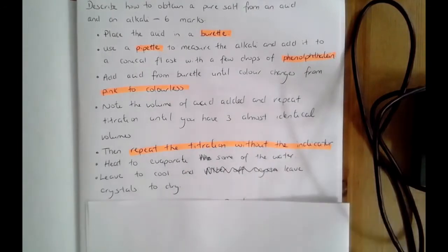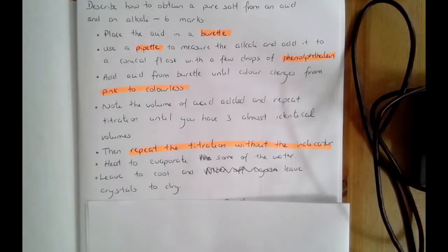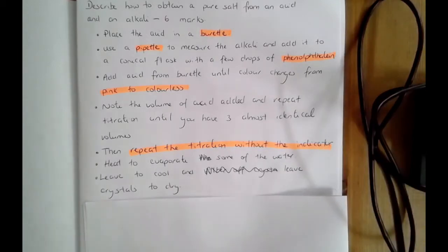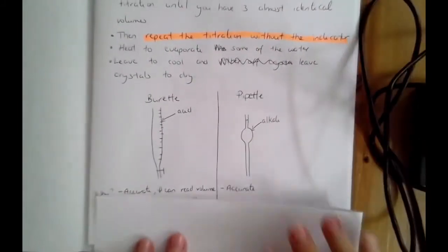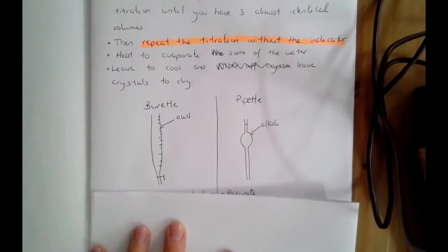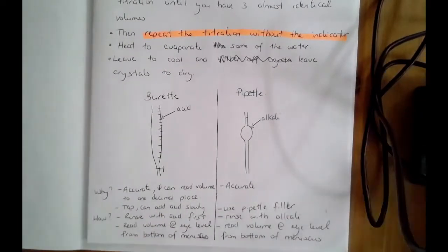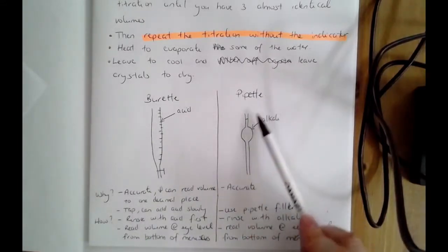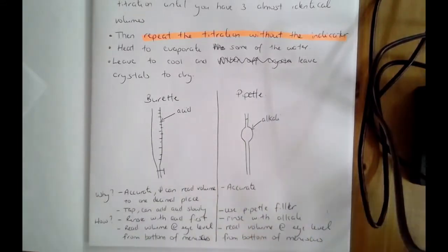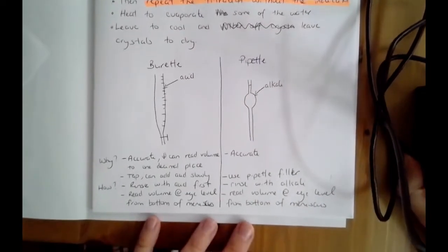That method will always get you six marks. Even if the question gives you a specific acid or alkali, you can still write that out and get full marks. The other thing they can ask about is the burette and the pipette. Here is a crude drawing of both: the burette is where we put the acid, and the pipette is the device used to measure the alkali.